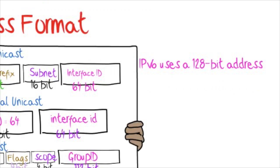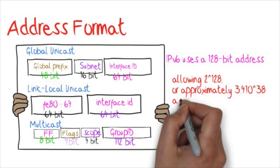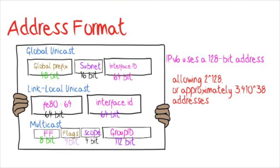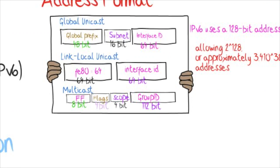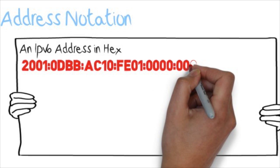IPv6 uses a 128-bit address, allowing approximately 4.3 billion addresses. IPv6 addresses are represented as 8 groups of 4 hexadecimal digits separated by colons, for example.